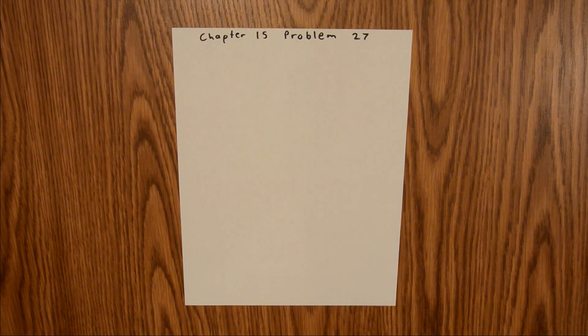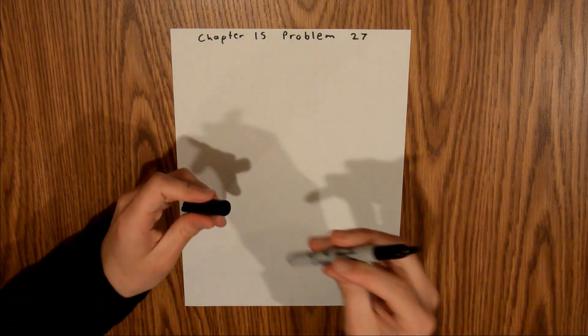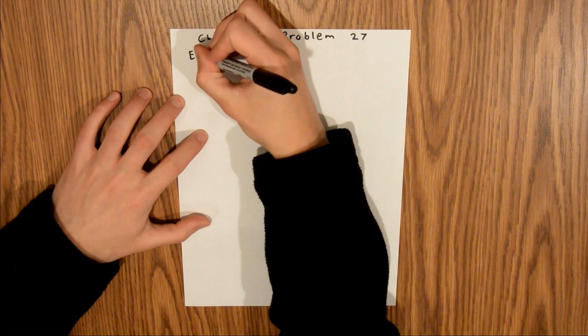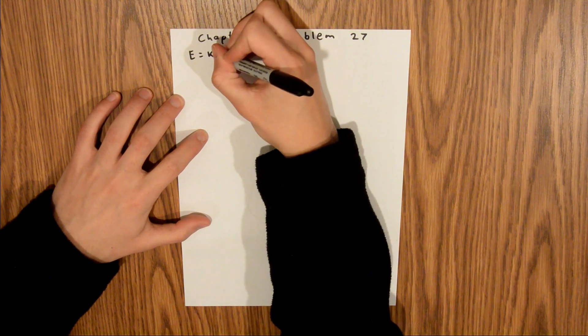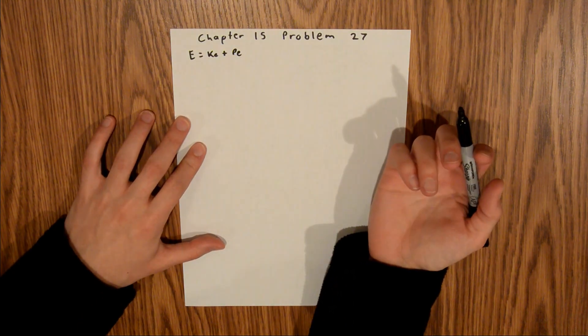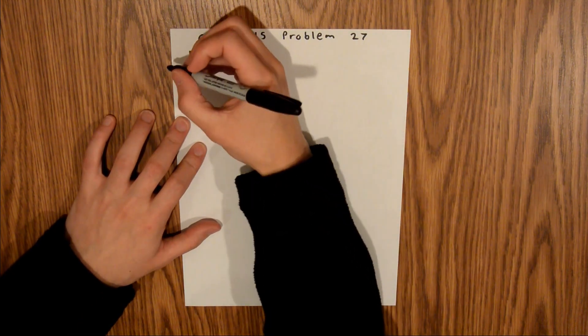Chapter 15 is all about oscillations, and in Problem 27, we are trying to find the mechanical energy of a block and spring system. We know that mechanical energy is equal to the kinetic energy plus the potential energy. So we need to solve for each of those, and we'll start with kinetic energy.